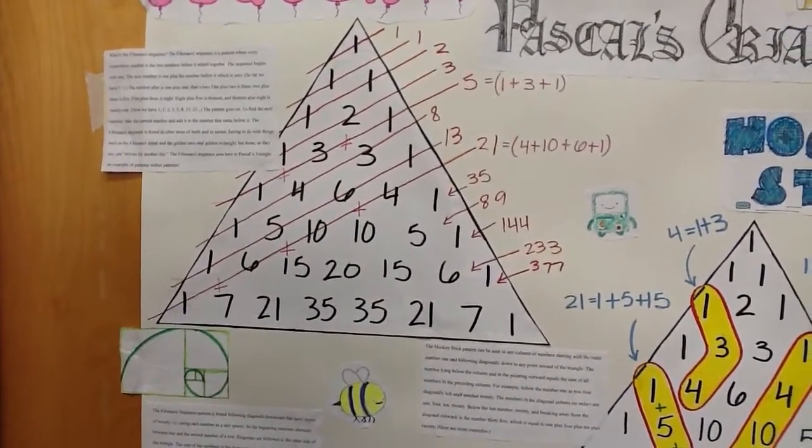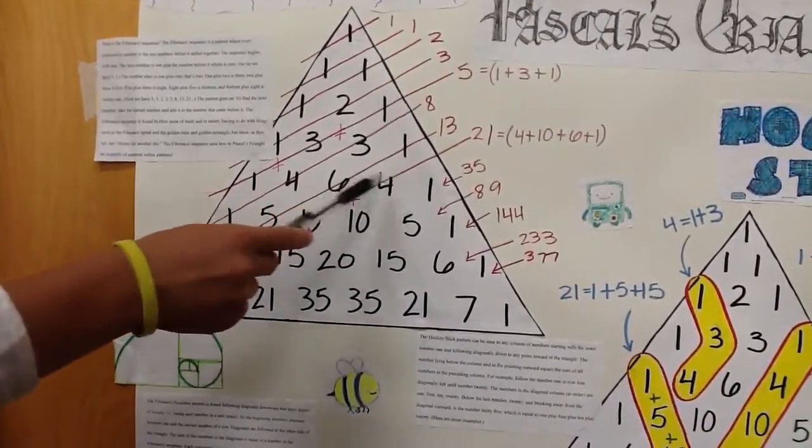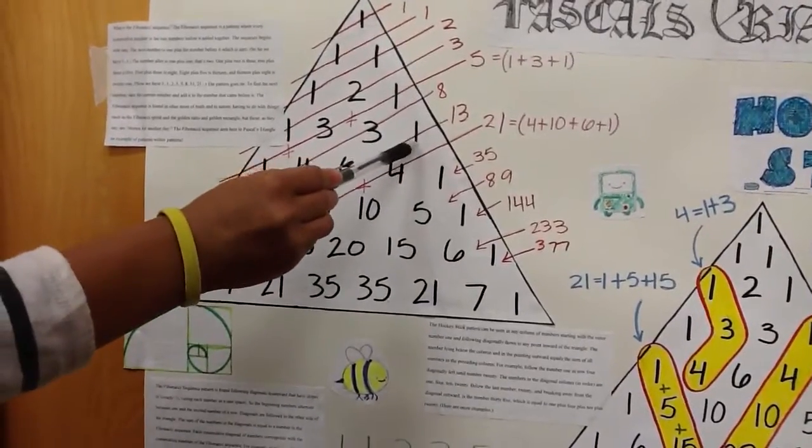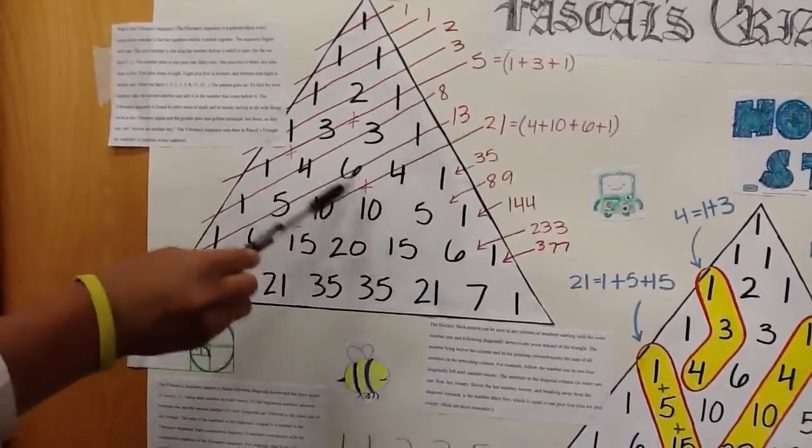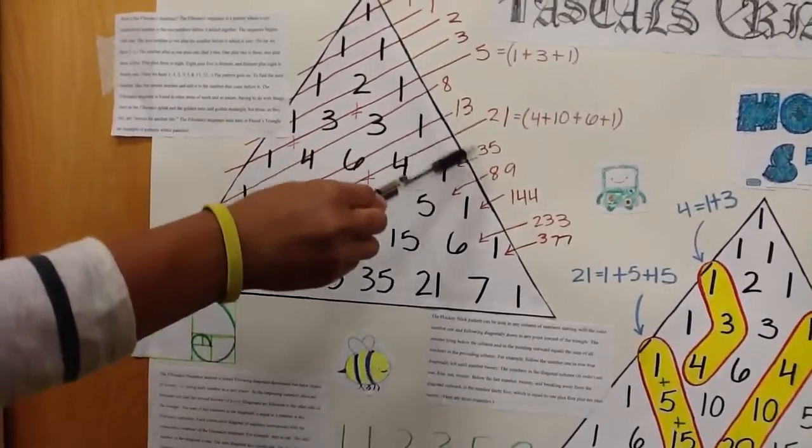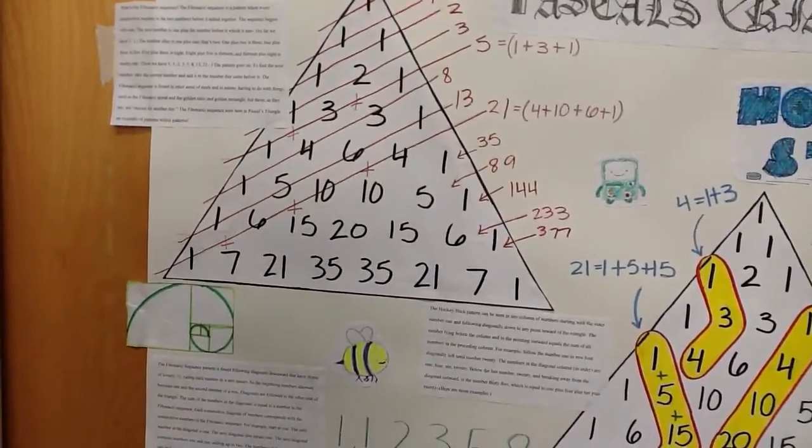So here's an example. If you start at this row or this diagonal, when we make this diagonal, the numbers are 1, 6, 5, and 1, and they make 13. And the next one, the numbers here, make 21. So they're consecutive to the Fibonacci sequence.